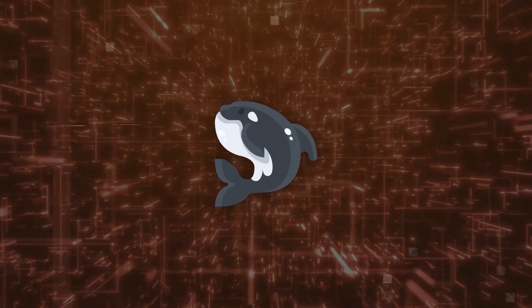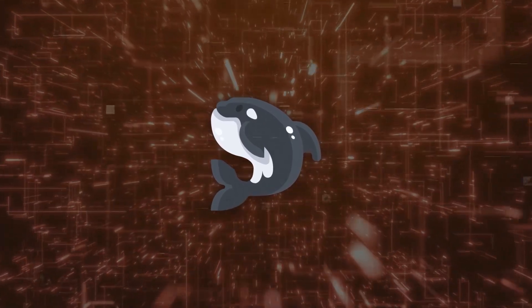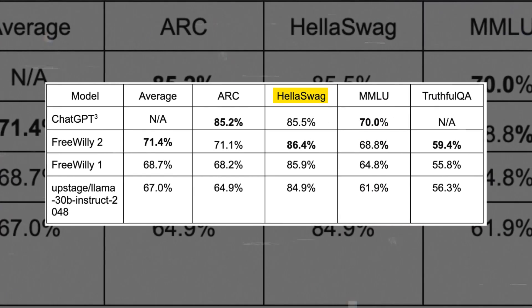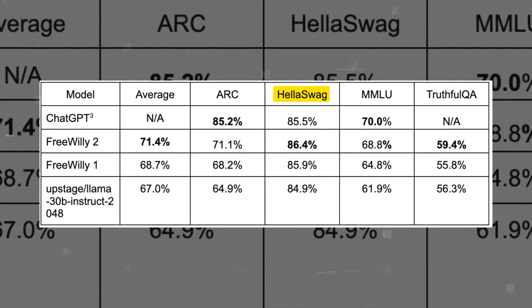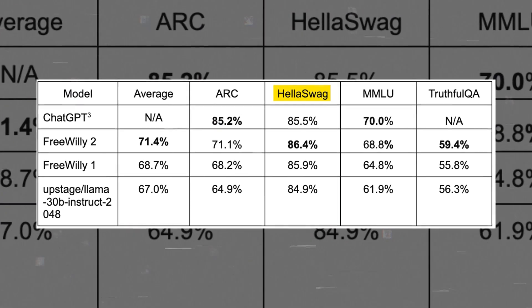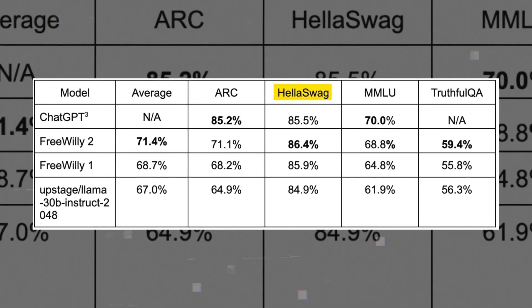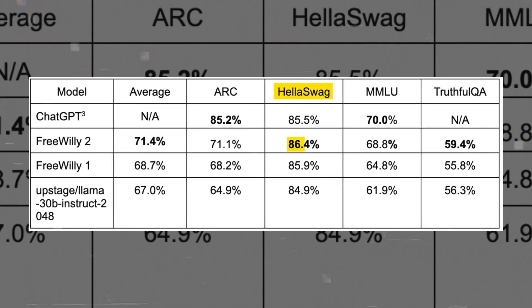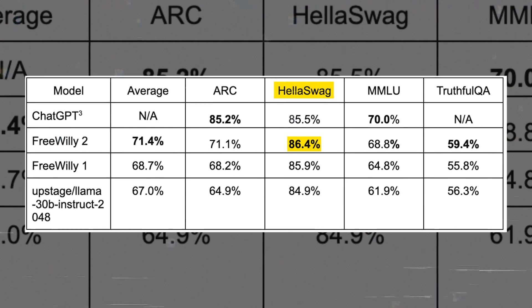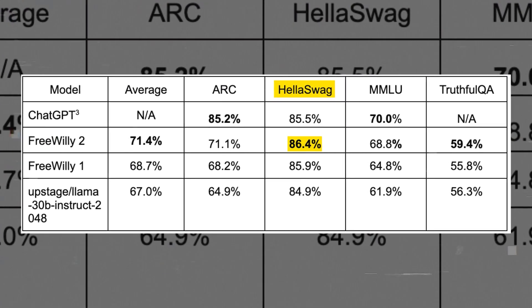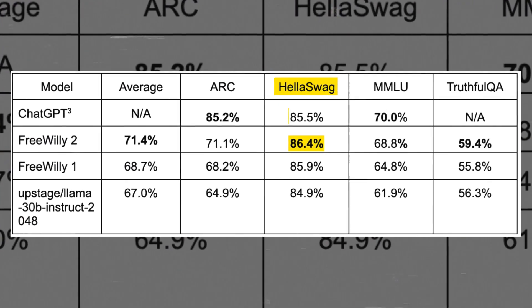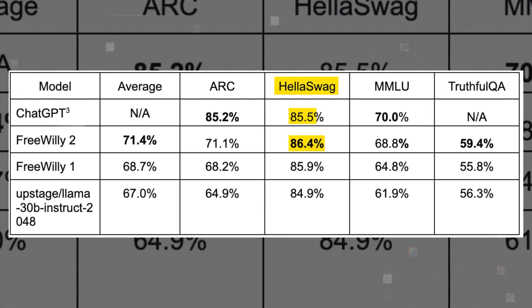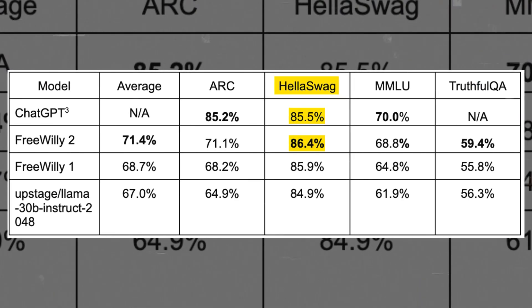Free Willy 2 also did really well on some tough tasks. On the HellaSwag task, where the model has to figure out the best ending for a story, Free Willy 2 was right 86.4% of the time — better than ChatGPT, which was right 85.5% of the time.